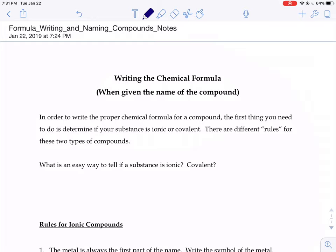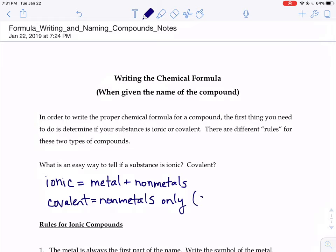An easy way to tell if something is an ionic compound versus a covalent: the ionic ones are always going to be made up of a combination of metals with nonmetals, whereas the covalent ones are typically nonmetals only. Occasionally you might get a metalloid to sneak in there, but almost all covalent compounds are made up of nonmetals only.